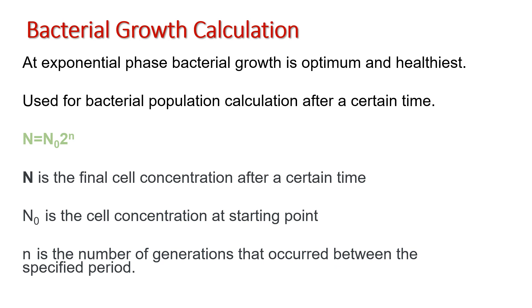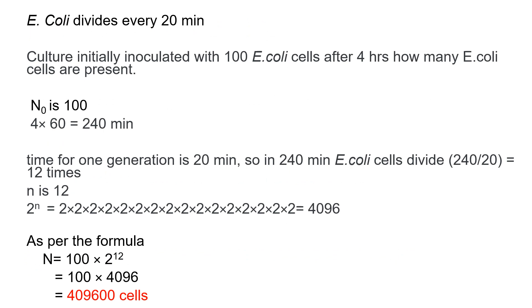In the log phase, bacterial growth is optimum and healthiest, so this phase is used to calculate bacterial population at a particular time. This is the formula. Here, N is the final cell concentration after a certain time, N0 is the initial cell concentration, and small n is the number of generations that occurred between the specified period.